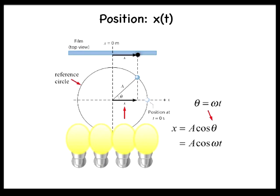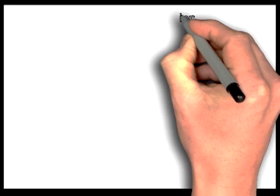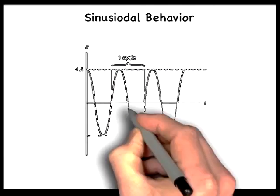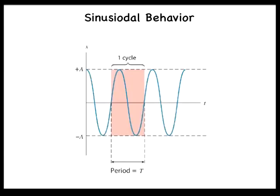Let's look at the sinusoidal curve for the displacement, x equals a cosine omega t. First, a is the amplitude of the motion and defines the extremes of the position at plus and minus a. Next, the time it takes the motion to undergo one complete cycle, or to repeat itself, is called the period, T.